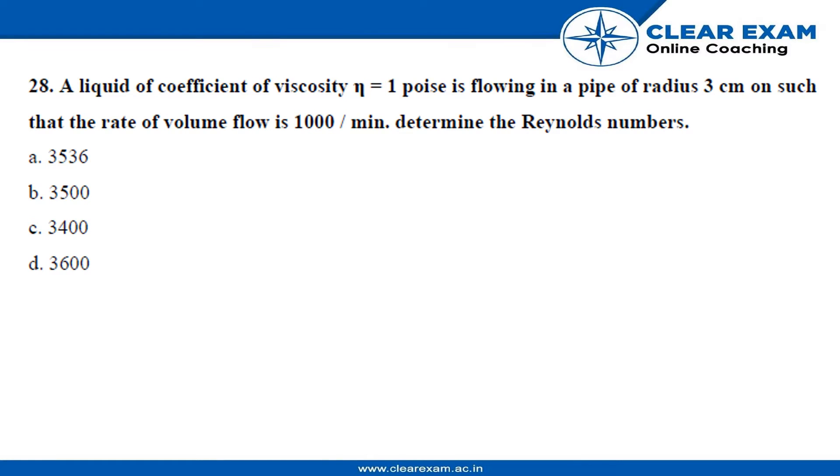The question is, a liquid of coefficient of viscosity one poise is flowing in a pipe of radius 3 cm such that the volume flow is 1000 per minute. Determine the Reynolds number.